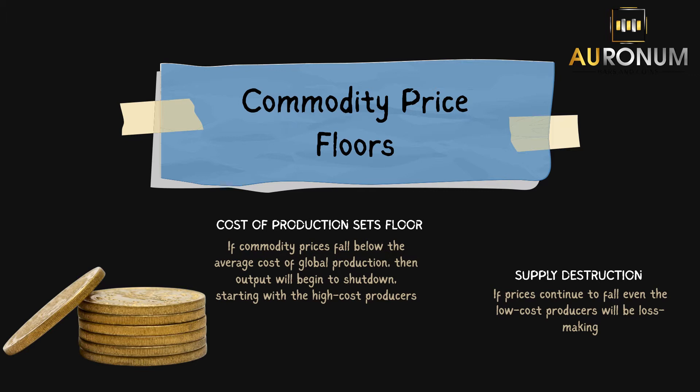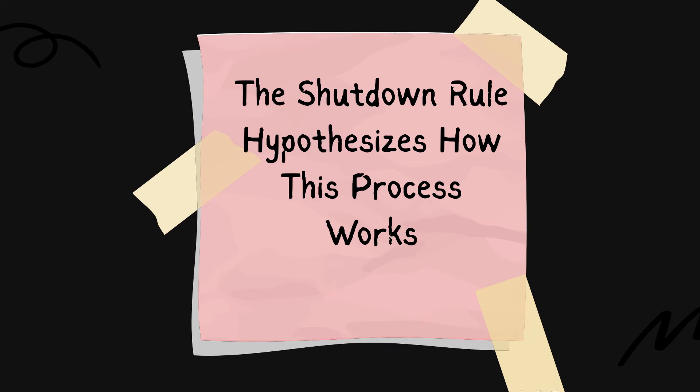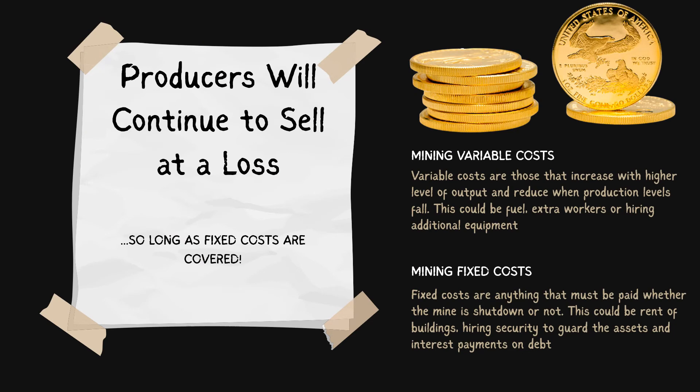If that's not enough to abate the selling and the downtrend in the gold price, then even the low cost producers will become quite vulnerable. If they become loss-making, then what could happen is the whole supply of gold to market will collapse — and this is something called supply destruction.